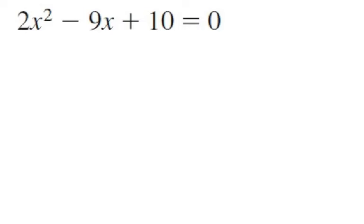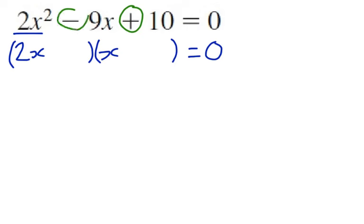This one is similar but has a negative sign in the quadratic. We start in the same way by putting in our two sets of brackets and putting them equal to 0. And this time we have 2x squared. So we need a 2x in one bracket and an x in the other. When we have a plus at the end we know both signs must be the same. And the negative sign here tells us they're both minus signs. So we put 2 minus signs in.